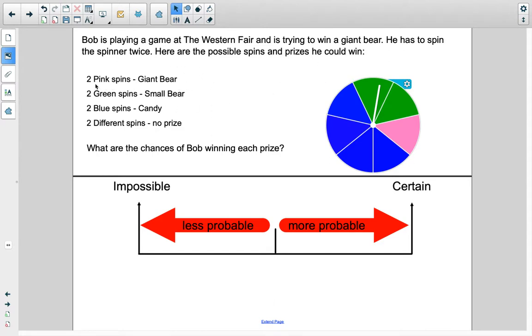If he spins twice and both times it lands in pink, he wins the giant bear. If both times they land in green, he wins the small bear. If both spins land in blue, he wins the candy. And if he gets two different colors, he doesn't get a prize.